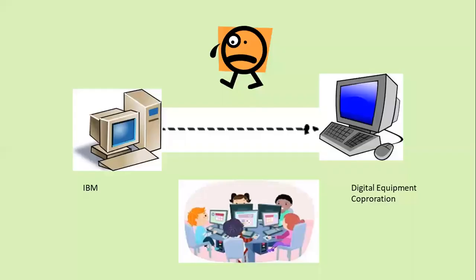So let's say in some company, the accounts department has devices from IBM and another department has devices from Digital Equipment Corporation. They will not be able to communicate or share information, which is a big problem. Thus, to overcome this issue, ISO came into picture and developed the OSI reference model to give a standard approach.